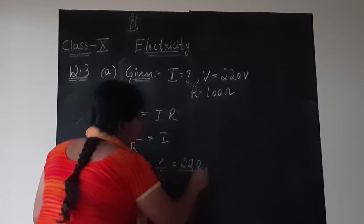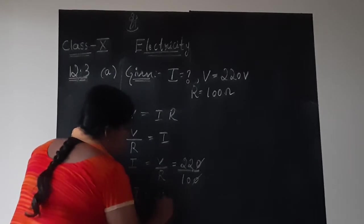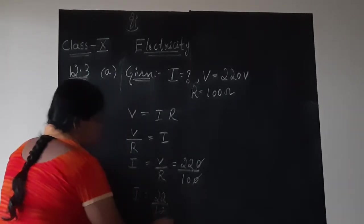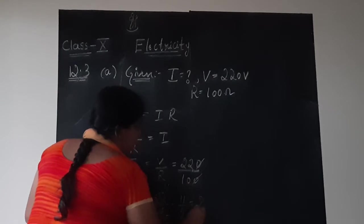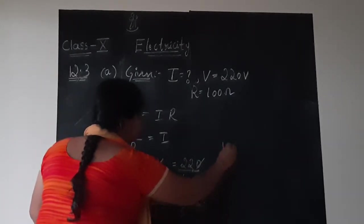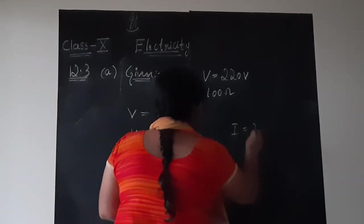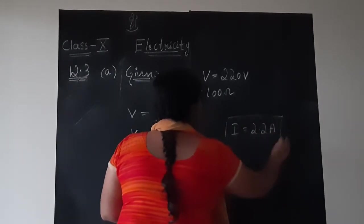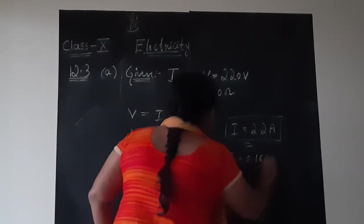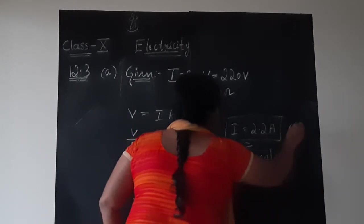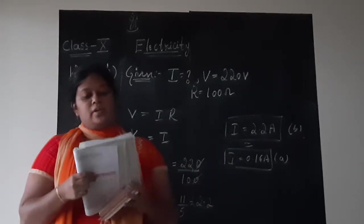Now let me substitute. V is 220, R is 100. Zero, zero gets cancelled. I am left with 22 divided by 10. Two 5s are 10, two 11s are 22. 11 divided by 5. So 5 into 2 is 10 means 1 remaining. I got I to be 2.2. That is I is equal to 2.2 ampere is the current. Previously we got I is equal to 0.16 ampere. This is solution to A. This is solution to B. We got I to be equal to 2.2 ampere.